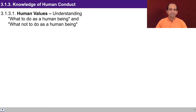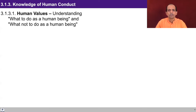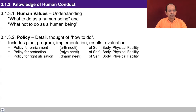Human values essentially mean what to do as a human being and what not to do — the participation of a human being in the larger order. Policy means detailing out the thought and analysis of how to do it. Once we can see our role in existence, we can work out how to fulfill that role, including plan, program, implementation, results, and evaluation.